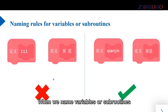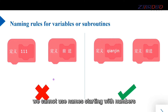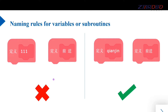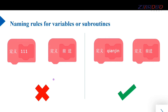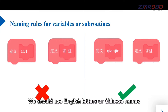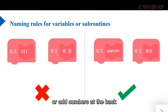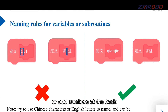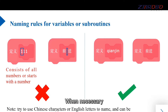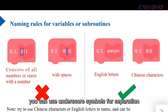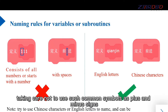When naming variables or subroutines, you cannot use names starting with numbers and cannot add spaces. You should use English letters or Chinese names, or add numbers at the back when necessary. You can use underscore symbols for separation, but avoid common symbols such as plus and minus signs.